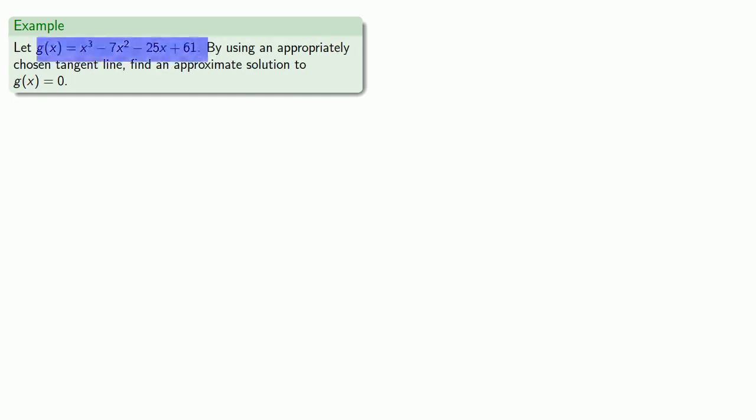suppose we have our function g(x) = x³ - 7x² - 25x + 61. By using an appropriately chosen tangent line, let's find an approximate solution to g(x) = 0. So let's think about the geometry.